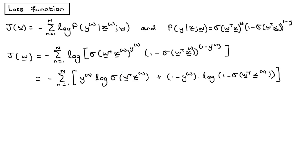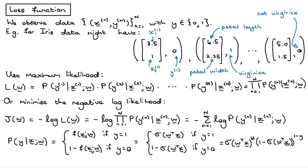We now have an expression for our loss function in terms of the actual parameters from our model. In the next video we'll look at how we actually choose the best w — we want to wiggle w so that we get high scores for the actual class label given the feature vector for each training item. We're going to try to get the highest likelihood, or equivalently the lowest negative log likelihood, with respect to the parameter vector w. That's what we'll look at in the next video.